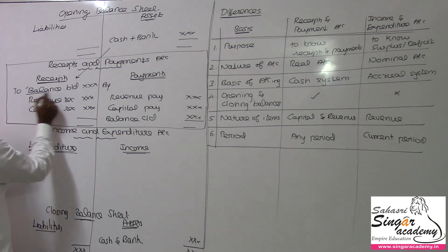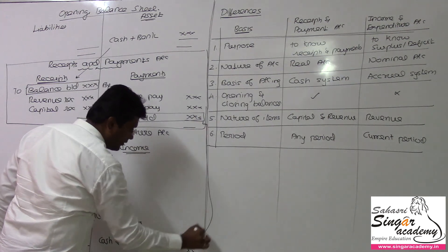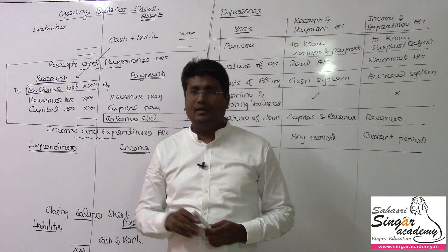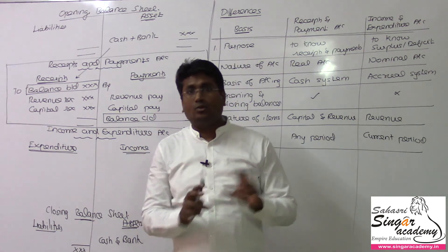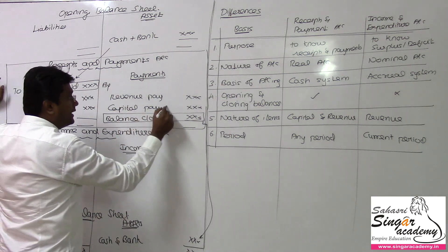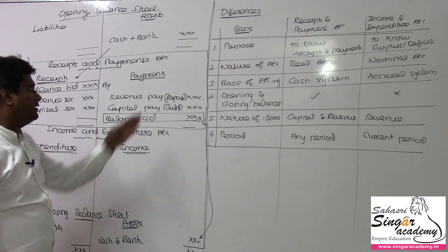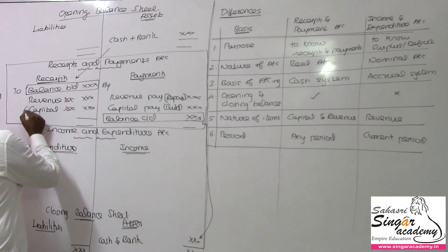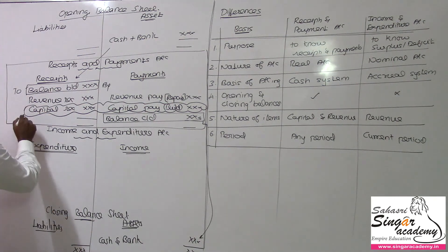Capital receipts and capital payments go to the balance sheet only. For example, if you pay for building and repair — that becomes a capital payment because it increases the asset. If you pay rent, that is a revenue payment. It is very simple: capital payments involve assets and liabilities and go to the balance sheet only.